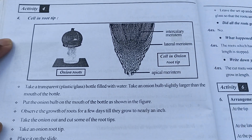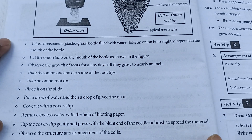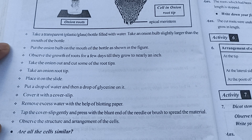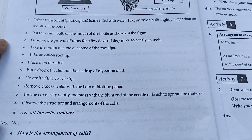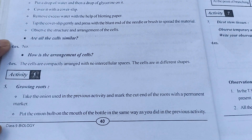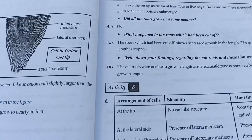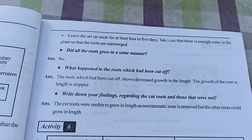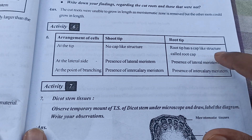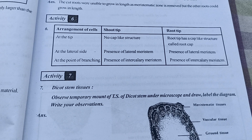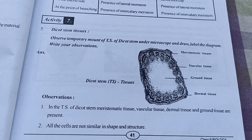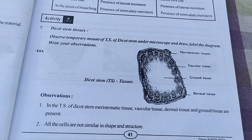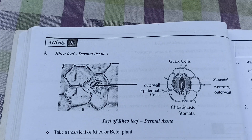Activity four is about growing roots and the answer is shown here. Activity five is also about growing roots. Activity six, activity six answer, and activity seven are all shown here one after another.